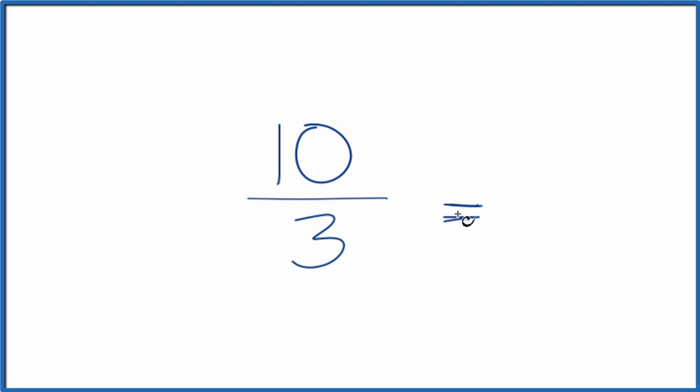So to do that we need to find a common factor, something that goes into 10 and 3 evenly. We're looking for the greatest common factor.